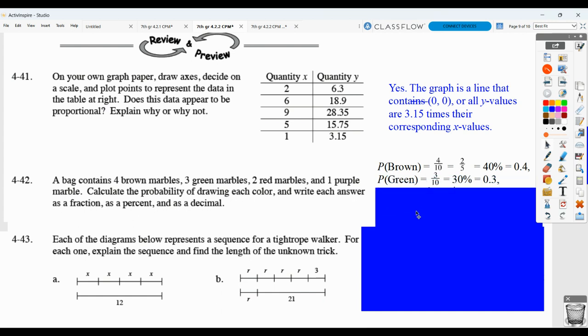Then, for green, it would be 3 green marbles out of 10, which cannot be simplified. 3 tenths as a decimal, 30% as a percentage. Red would be 2 tenths. You could divide both top and bottom by 2 and get 1 fifth. You get 2 tenths as a decimal, 20%.